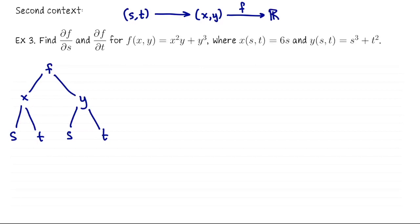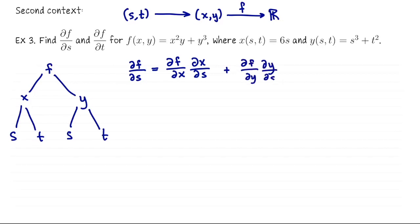Here's how we compute the partial derivatives. The partial derivative of F with respect to S measures how F changes with respect to X times how X changes with respect to S — that's (∂F/∂X)(∂X/∂S) — plus (∂F/∂Y)(∂Y/∂S). Similarly, the partial derivative of F with respect to T is (∂F/∂X)(∂X/∂T) plus (∂F/∂Y)(∂Y/∂T).